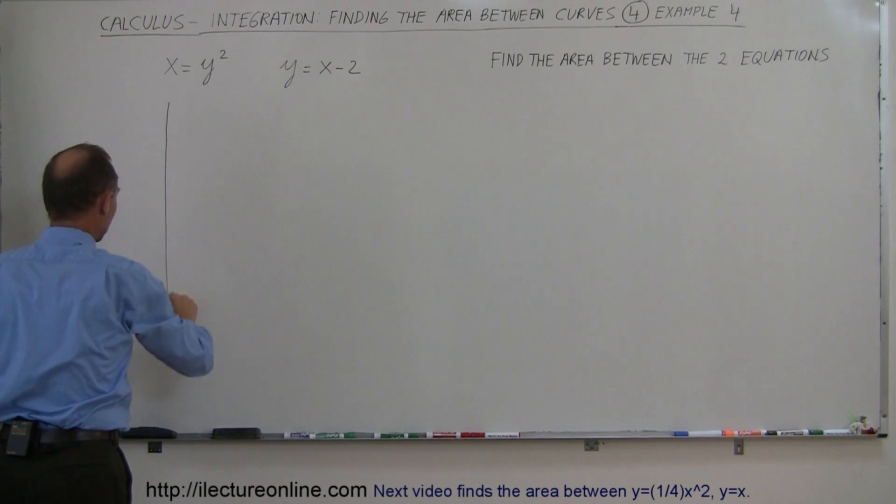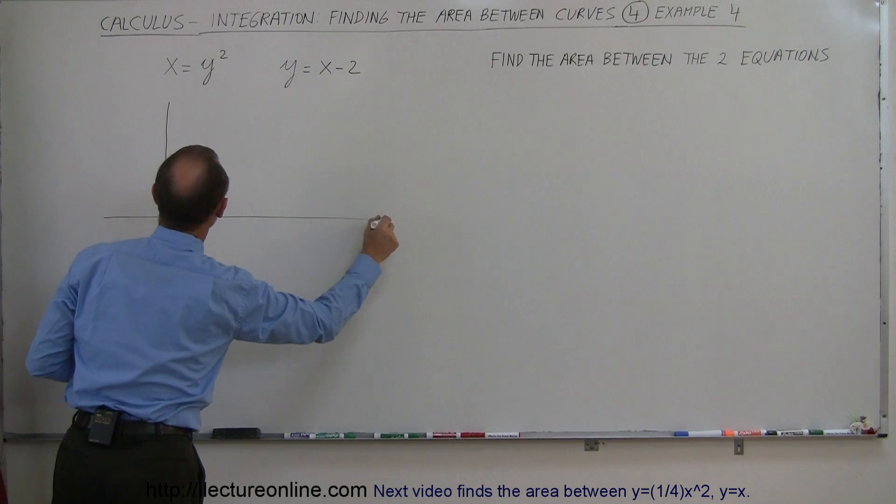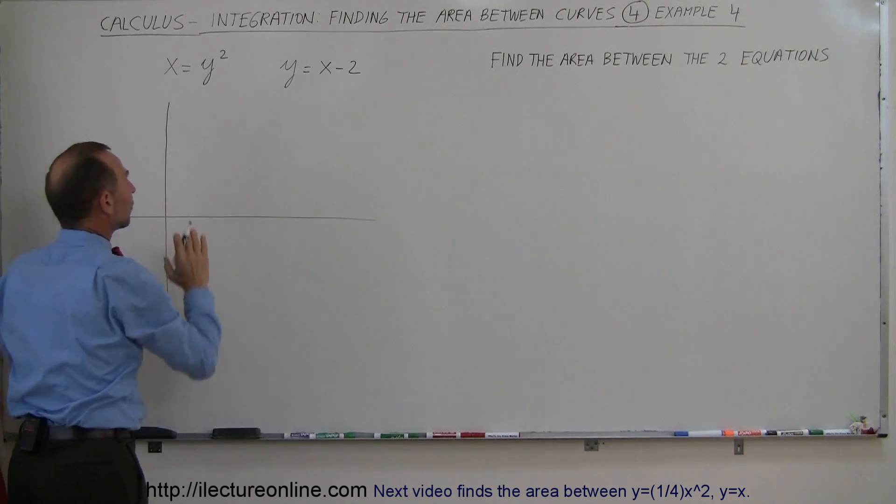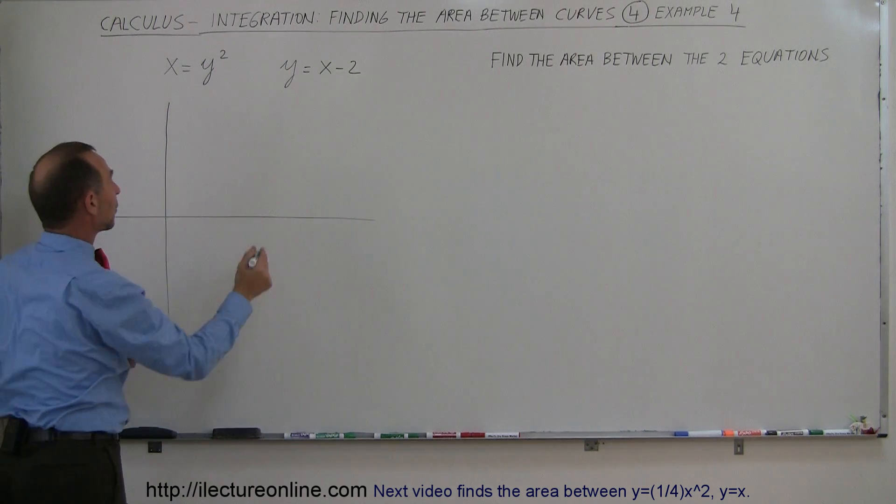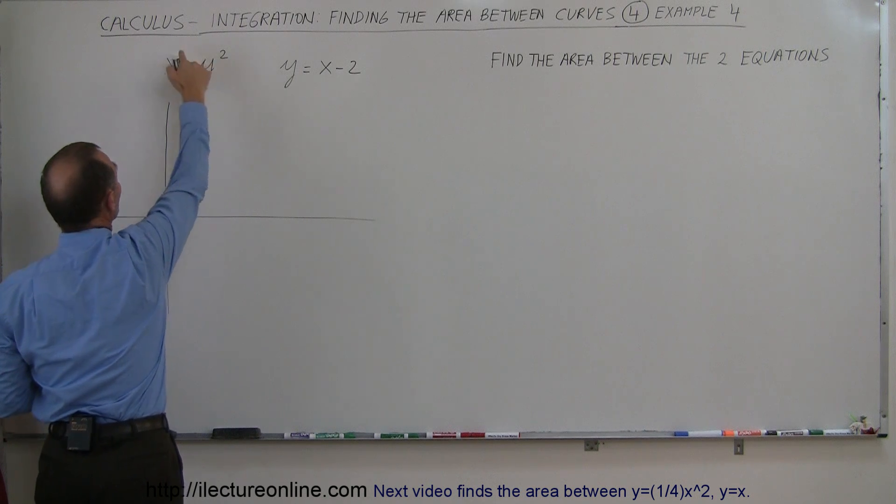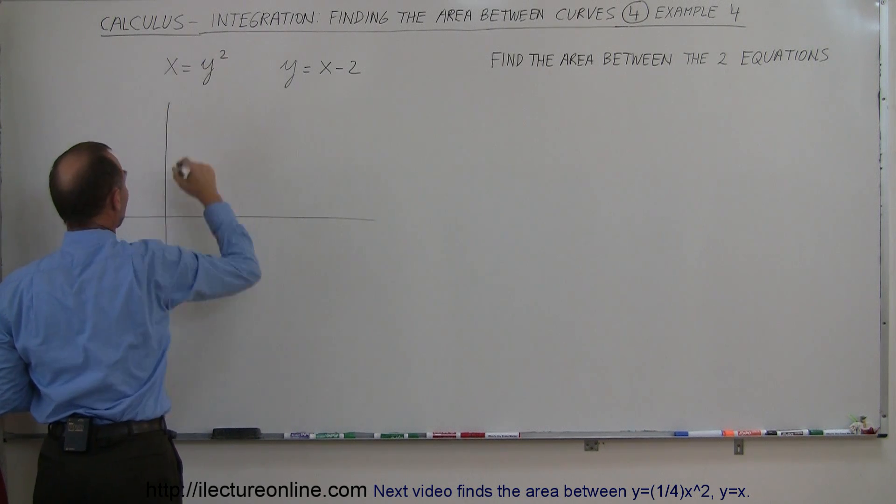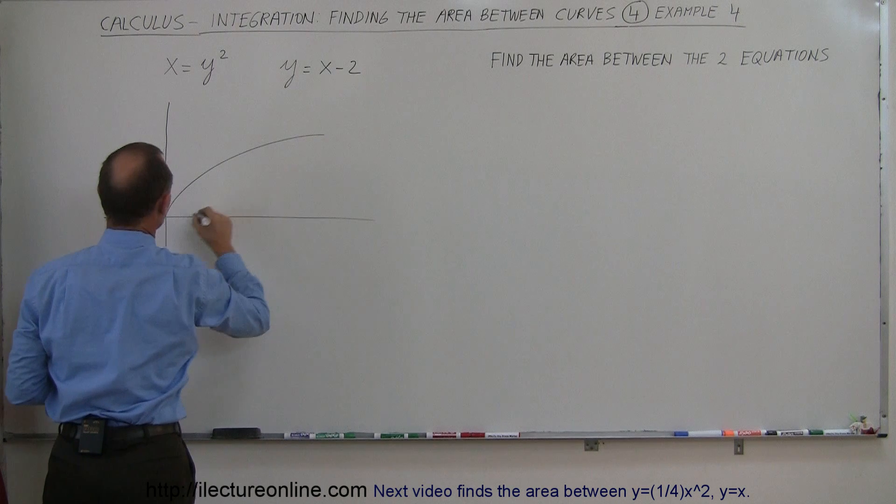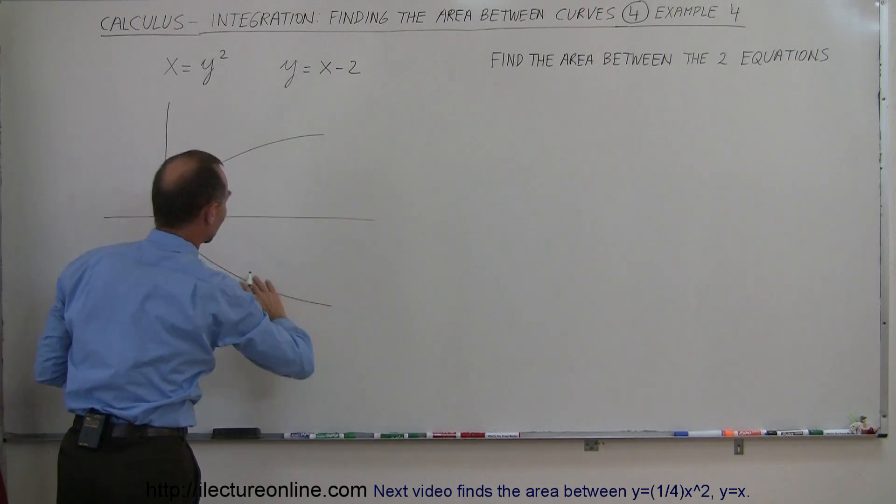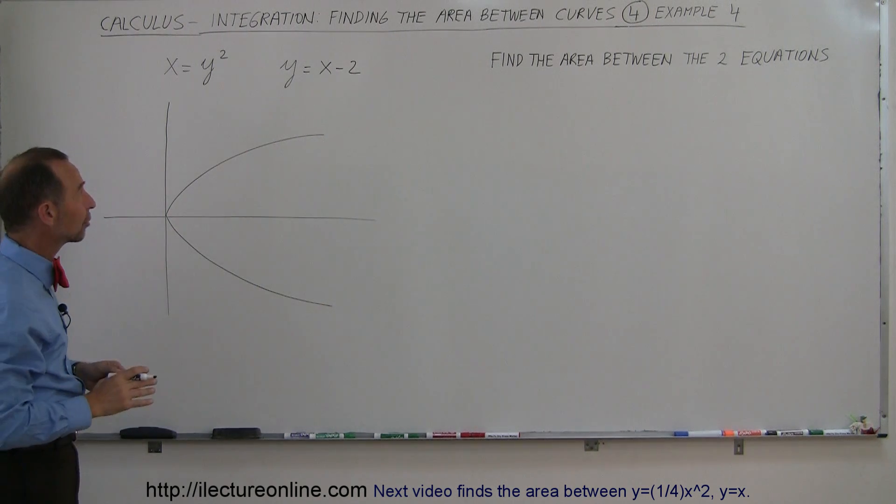So first, let's graph them to see what they look like. And x equals y squared is a parabola that is pointed sideways like that, because the exponent is not on the x term but on the y term, so that parabola looks like this. And therefore, this is called a relation, really, not a function.